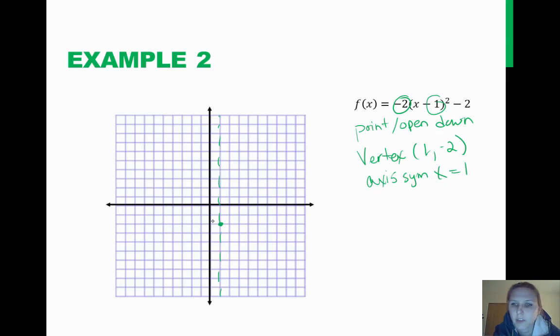Alright, so we have those two points. Now we need to find what our y-intercept is and our x-intercepts. So let's put in 0 for x to find our y. So we have negative 2 times 0 minus 1 squared minus 2. So if I do this, negative 1 squared minus 2, that's going to be negative 2 minus 2 or a negative 4. So our y-intercept is going to open up and it's going to come down to negative 4 right here.